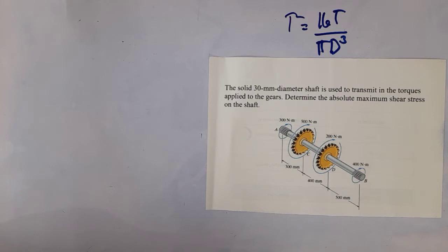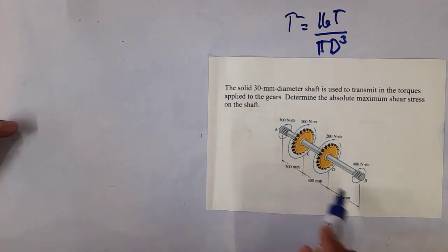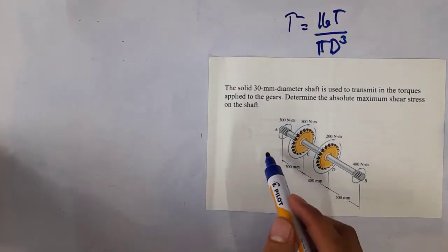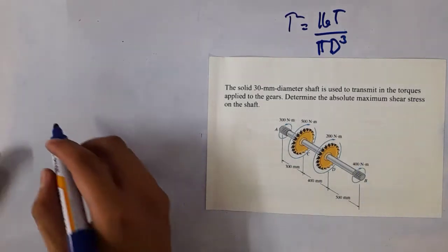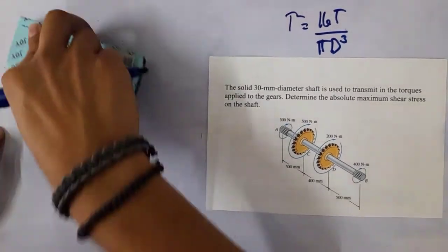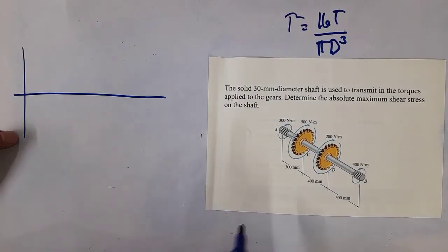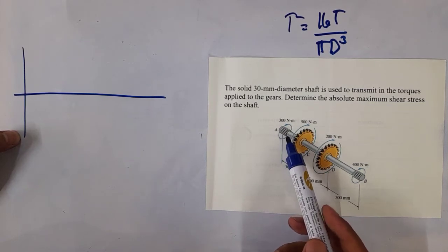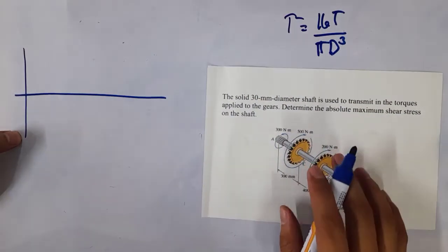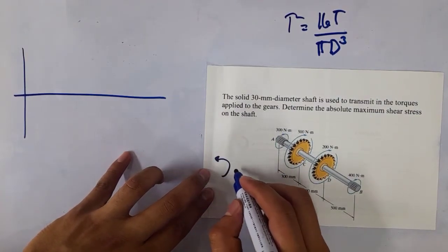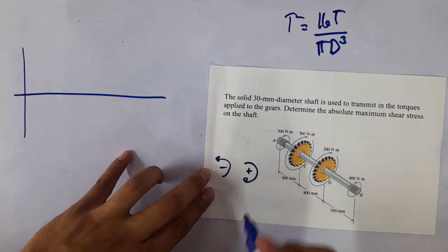Anyway, it's somehow similar but of course here it's different — much more different with the torque. You can either cut sections and compute the internal torque for each section, or you can make use of this diagram approach. So draw something like this, and at this particular section, you have 300 Newton meters. Just take note that for our sign convention, counterclockwise is negative and clockwise is positive.